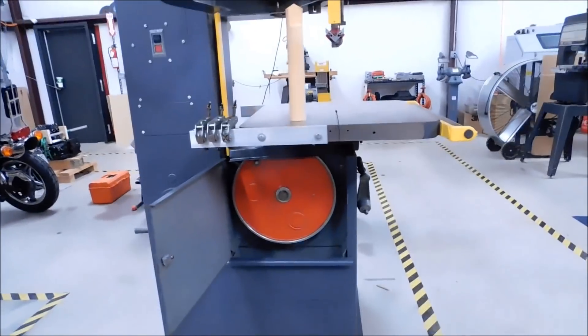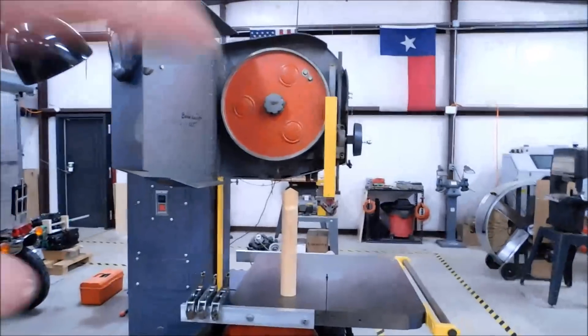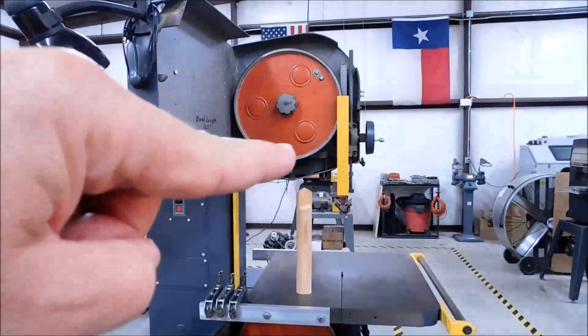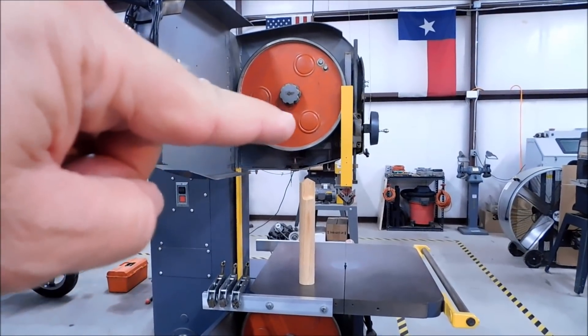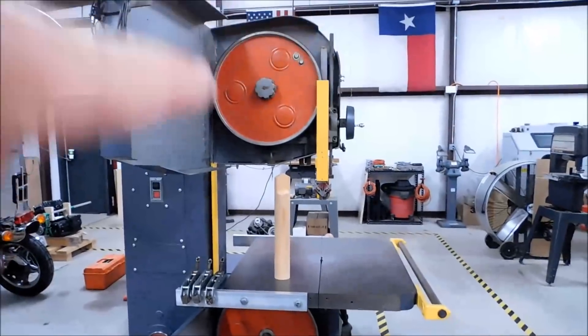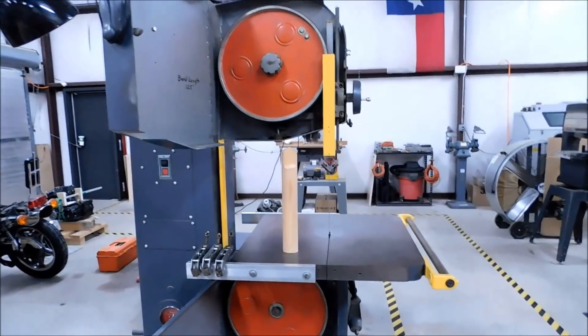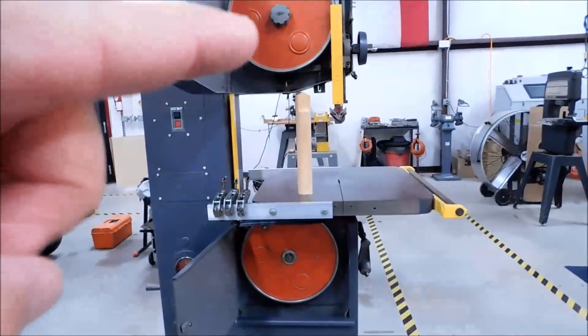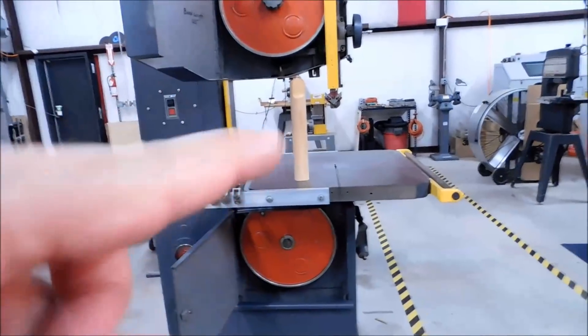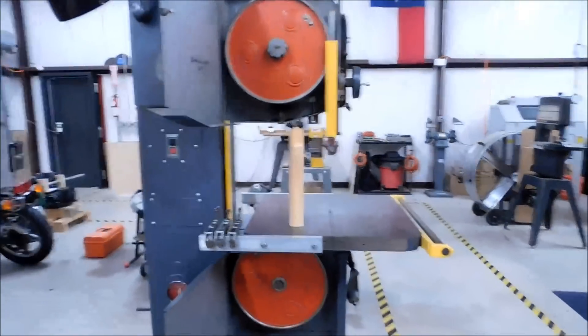And before we start, if you don't know how long your blade is, the top wheel goes up and down. Lower it to the bottom of the alignment range. Move it up about a half an inch or so. You can wrap a string around the top wheel and the bottom wheel, let it overlap, mark it off, measure the string. The actual formula is center to center times two plus one circumference. That's how long your blade should be.